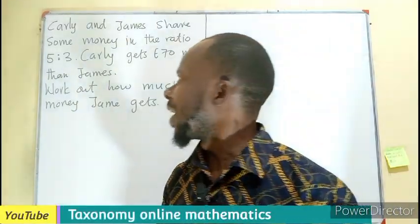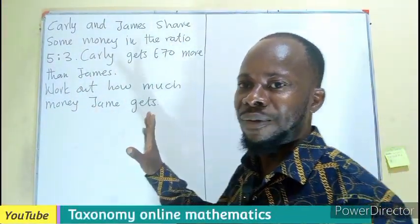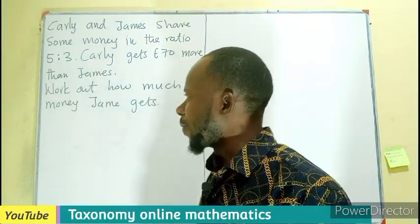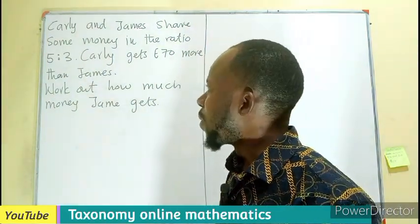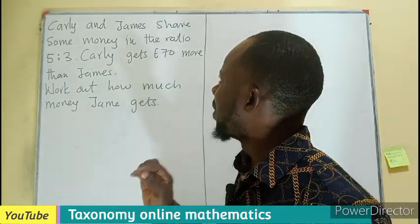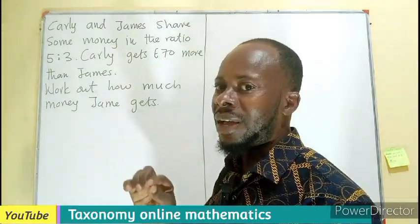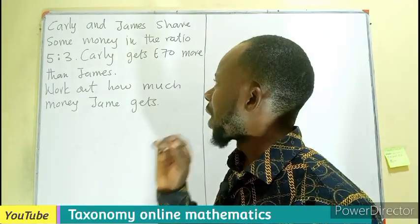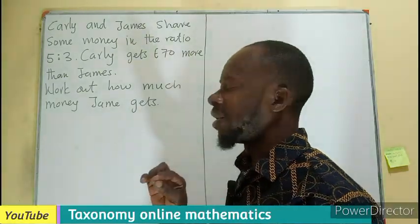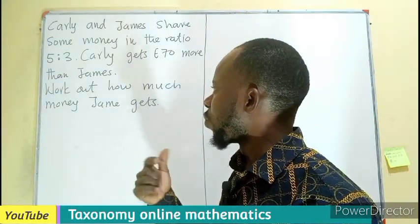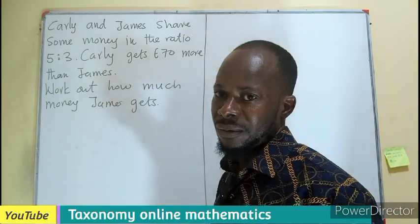Hello, welcome. Let's provide an answer to this question — it has been on the timeline for over a week now, with a lot of interesting answers also represented. So Kali and James share some money in the ratio 5 to 3. Kali gets 70 pounds more than James. We have to work out how much James received.